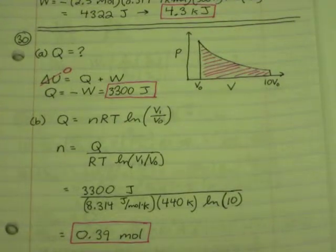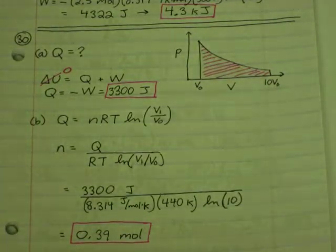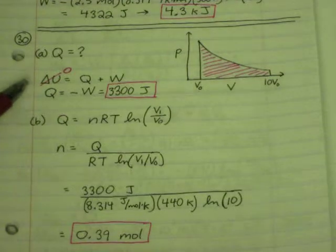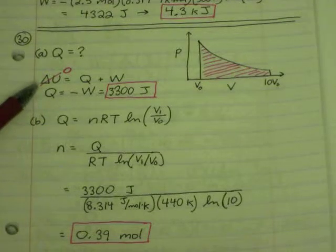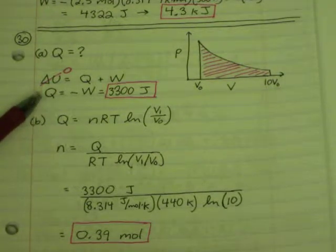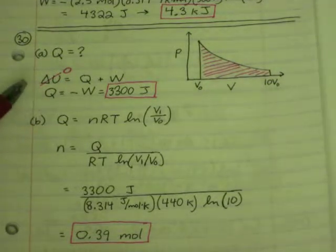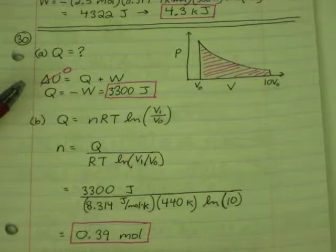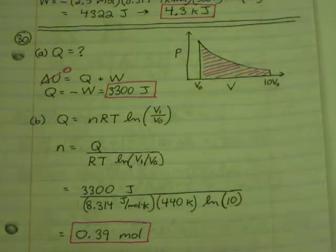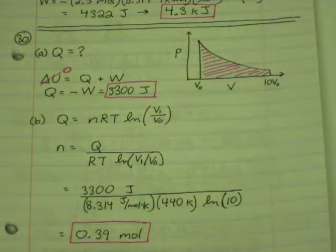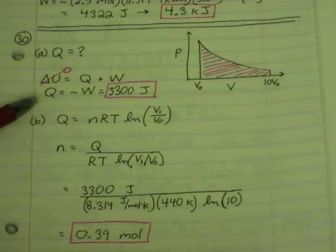For number 30, I've drawn a PV diagram. You can see it's another isothermal problem. Asking what Q is, well, if it's isothermal, we start with the first law of thermodynamics. Delta U equals Q plus W, but isothermal, delta U is zero. So we get Q equals negative W, so 330 joules. So as the gas expands, if there's no change in temperature, that means that heat has to be added. So the heat added is equal to the work done by the gas.